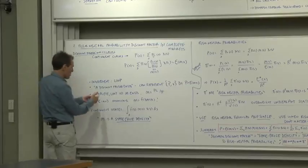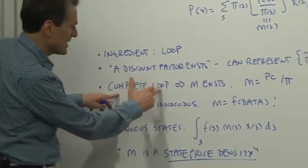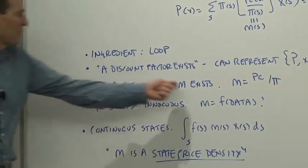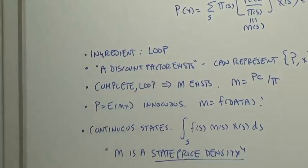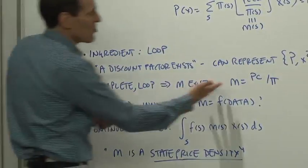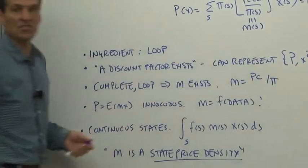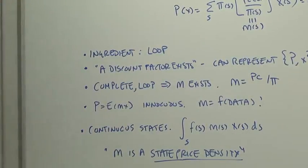In this case, the theorem goes, if the markets are complete, if the law of one price holds, then a discount factor exists. And in fact, we know how to construct the discount factor. You just take the contingent claims prices and divide by probabilities.